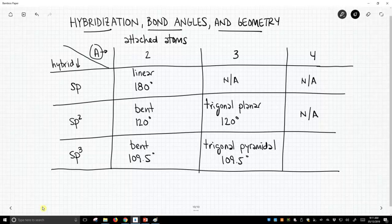And then finally, if we have four attached atoms and we're sp3 hybridized, our geometry will be tetrahedral and 109.5 degrees approximately will be our bond angle.